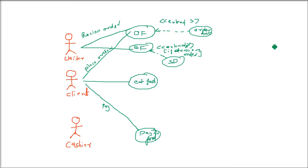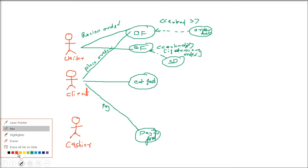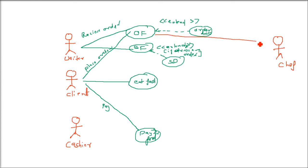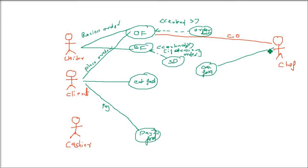We now add the chef as another actor. The chef gets the order, confirms the order, and then cooks the food. So we add two use cases: 'confirm order' and 'cook food', both linked to the chef. Whenever 'order food' is processed by the waiter, the waiter goes to the chef, the chef confirms the order and then cooks the food.